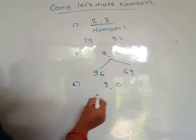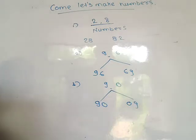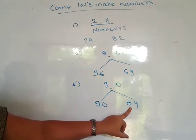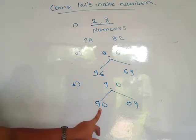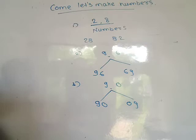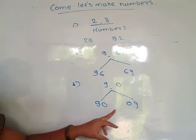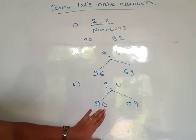When one of the digits is 0, it is only one digit number — because 0 has no value. So from digits 9 and 0, only one two-digit number is formed: 90. Writing 09 gives only a one-digit number, so you write only 90.